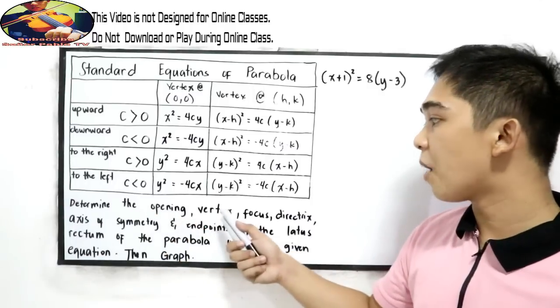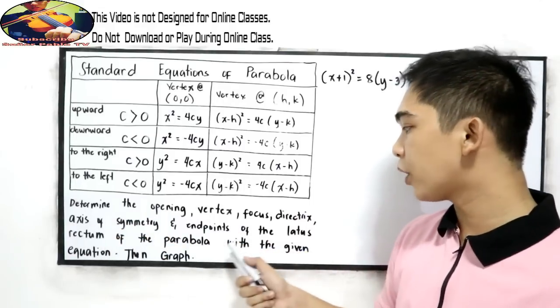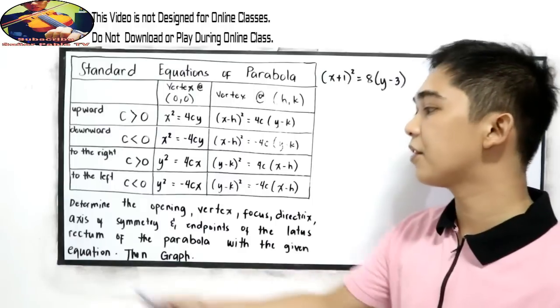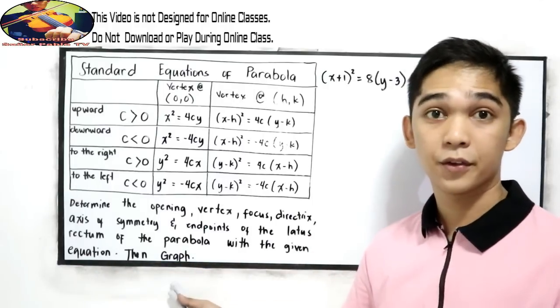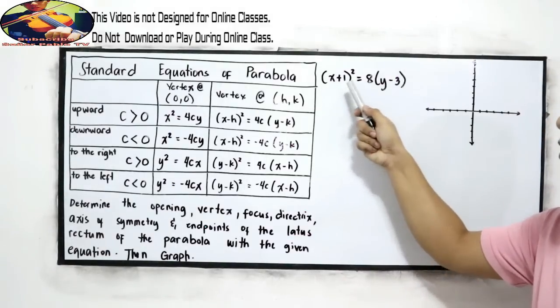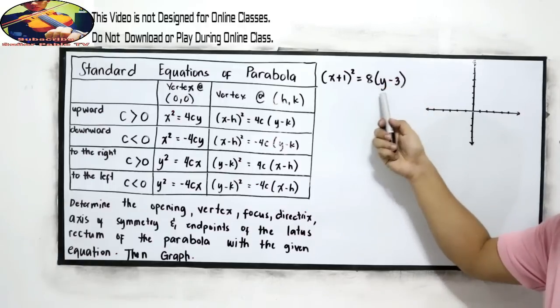So our problem is, determine the opening, vertex, focus, directrix, axis of symmetry, and endpoints of the latus rectum of the parabola with the given equation, then graph. So our equation is (x+1)^2 = 8(y-3).